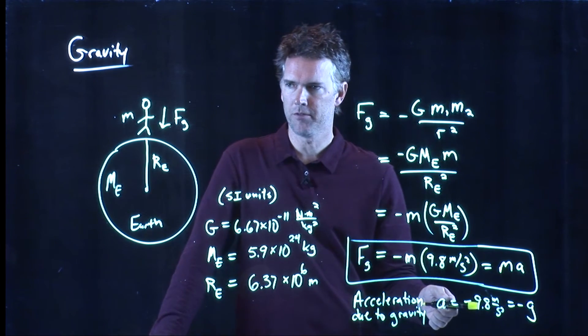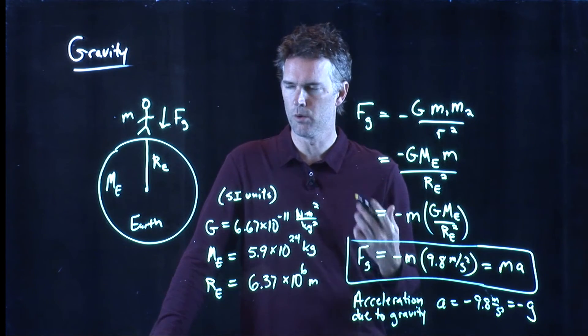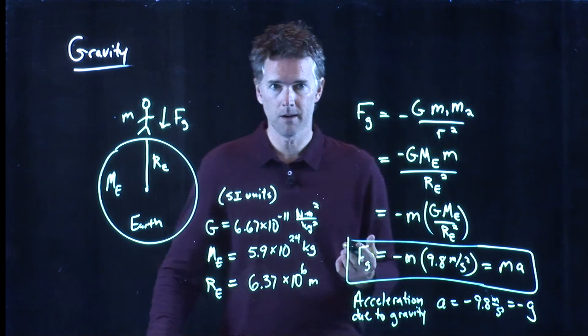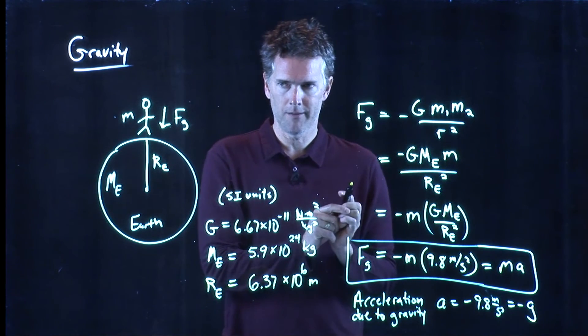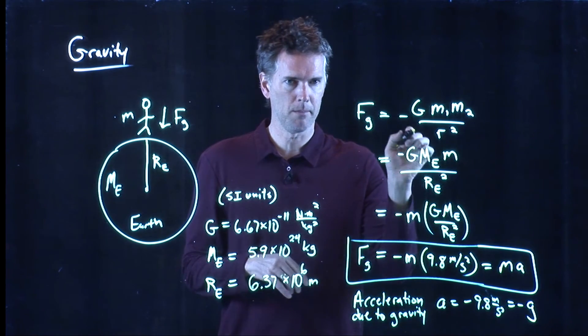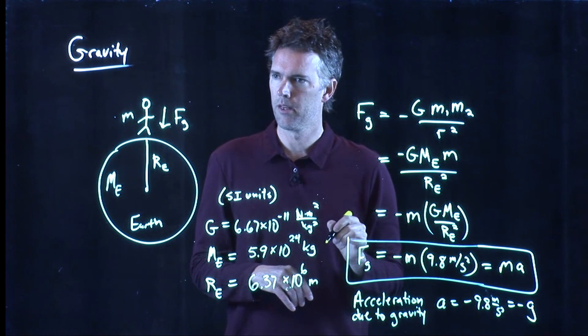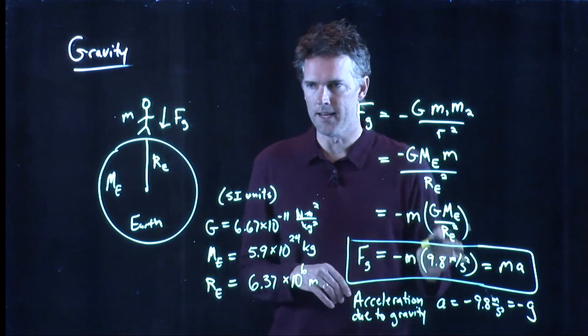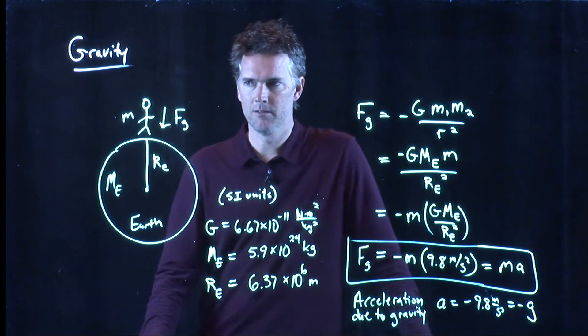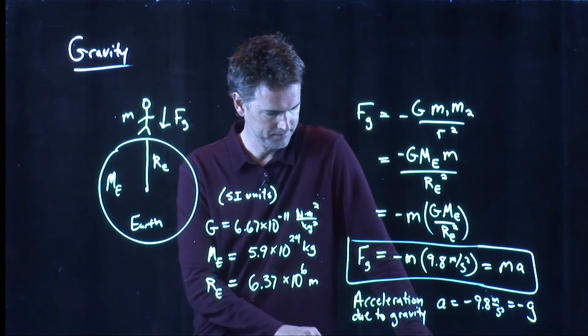That's where that 9.8 comes from. We've been hearing about 9.8 meters per second squared over and over. Where does it come from? It comes from Newton's universal law of gravitation if you put in the mass of the Earth and the radius of the Earth into this equation. You put those numbers in here, you get negative g, which I think is kind of cool. It ties it all back together. Take care.